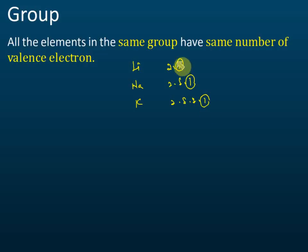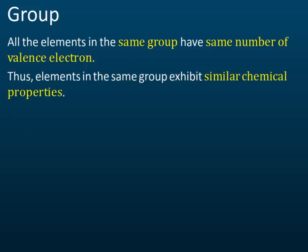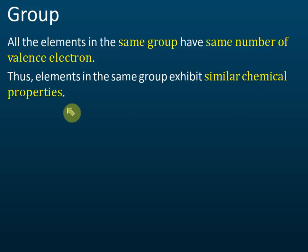Since all elements in the same group have the same number of valence electrons, they have the same or similar chemical properties, because the chemical properties of an atom are determined by the number of valence electrons.